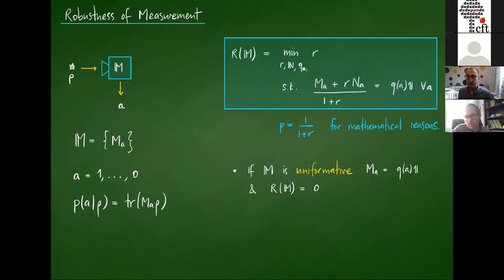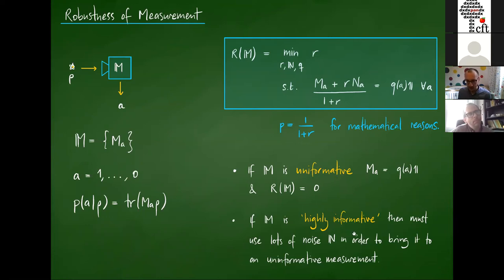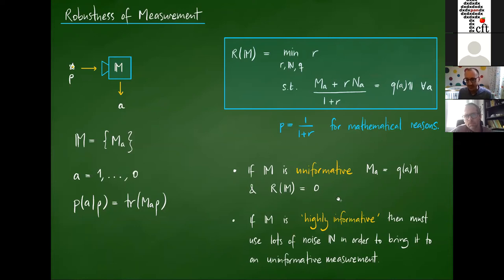I minimize R, making the probability of using the noise as small as possible, while taking the worst-case noise — the worst-case informative measurement. This gives our definition for the robustness of measurement. If the measurement is itself uninformative, the robustness is zero because I don't need any noise. When the measurement is highly informative — very far from the form Q_A times the identity — I'm going to need lots of noisy measurement to ruin it. This is defined in analogy to many other resource theories in quantum information theory where robustness has proven to be a useful way of proceeding.